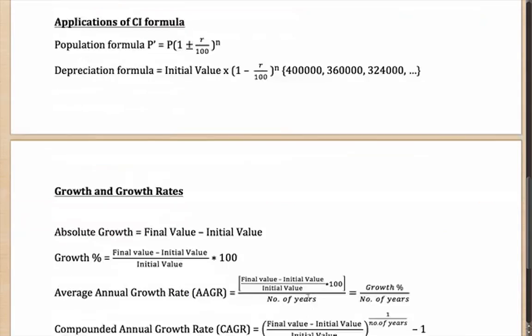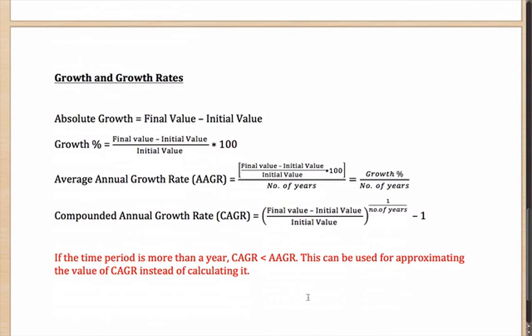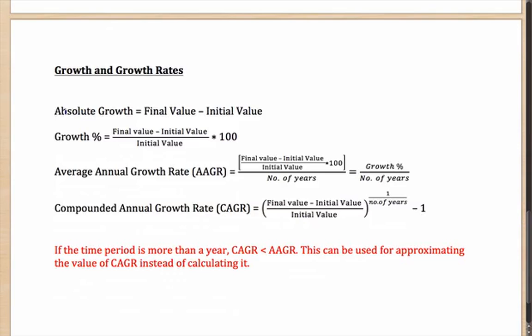Very similarly is the concept of growth and growth rates. Absolute growth is whatever is the final value minus the value that you started with. But when you have to calculate the growth percentage, then it is final value minus initial value on the base of the initial value into 100. This formula will give you the growth in percentage terms.